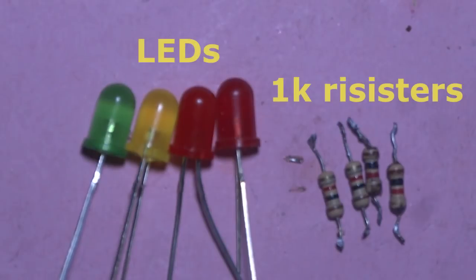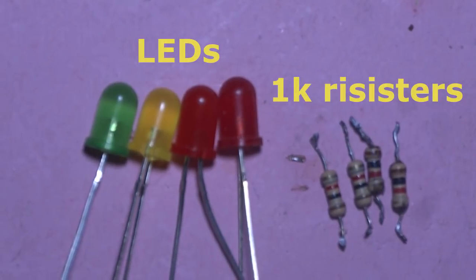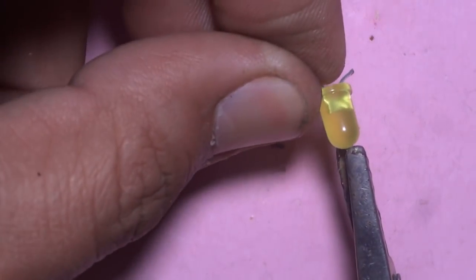In this video, I am making a battery level indicator. Components required: LEDs, 1K resistors.